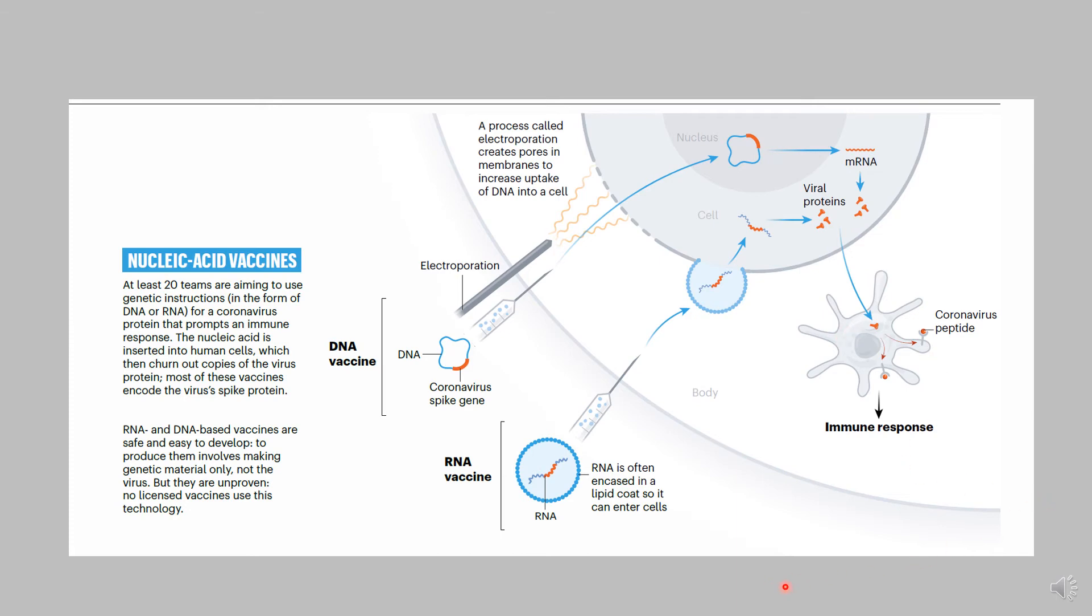On the face of it, this looks fairly simple. The big advantages are it's not a virus. So you don't have to spend years trying to make a virus. You don't have to use cell culture systems to produce large quantities of virus or animal models to test these viral vectors. Instead, you have just the genetic material, which could be either DNA or RNA.